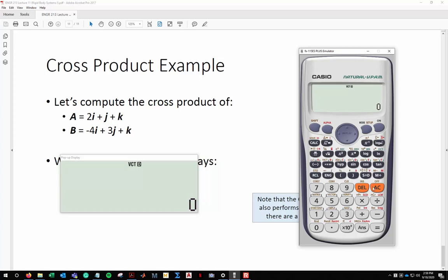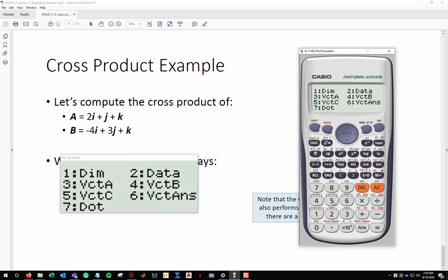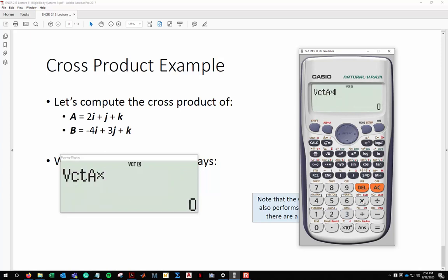Now we have to recall them. So we can do shift vector. This is above the number 5. Okay, and here you can see we have dimension, data, vector A, vector B, vector C. What we're going to do is say vector A, so 3, cross with vector B.